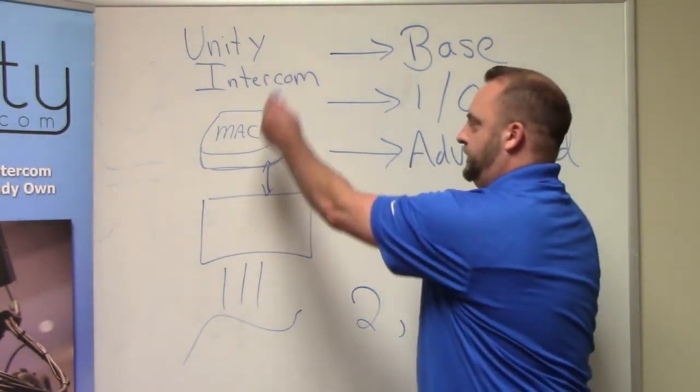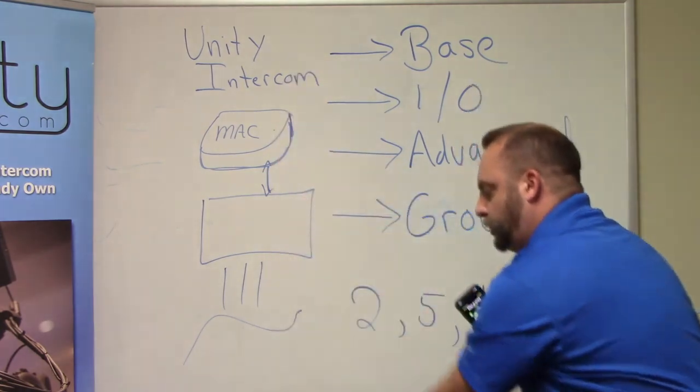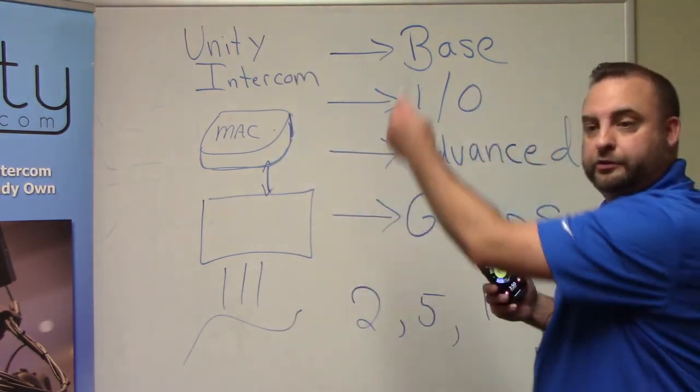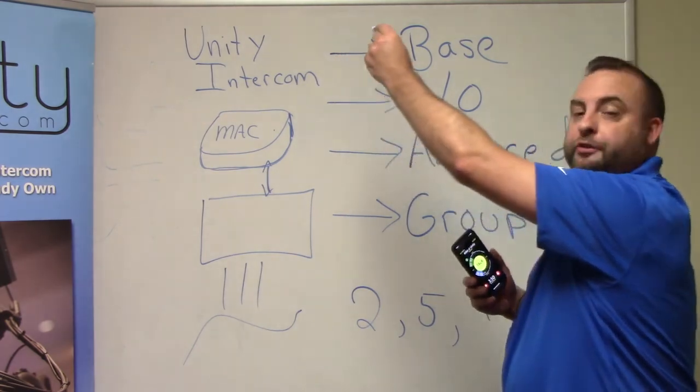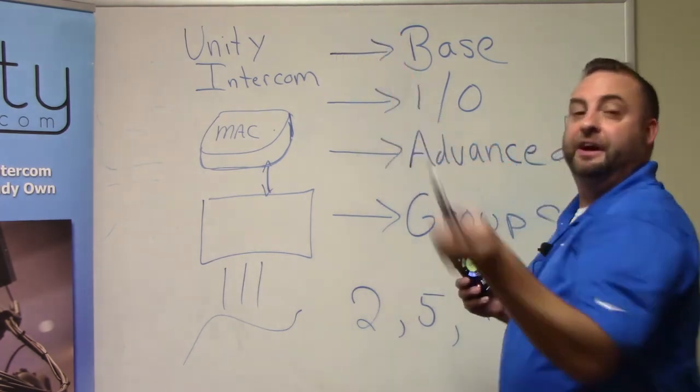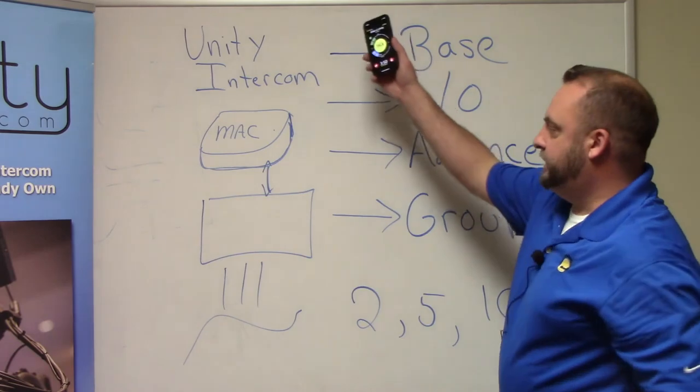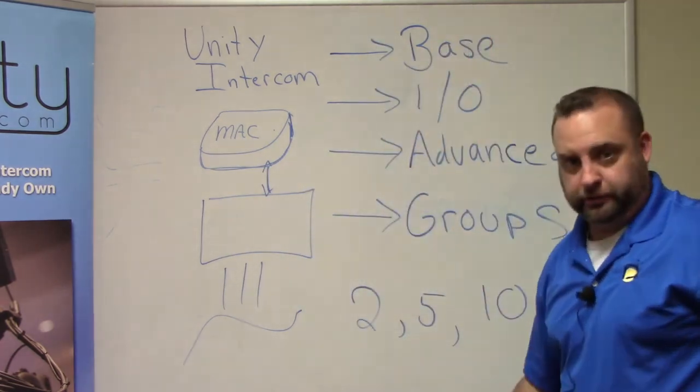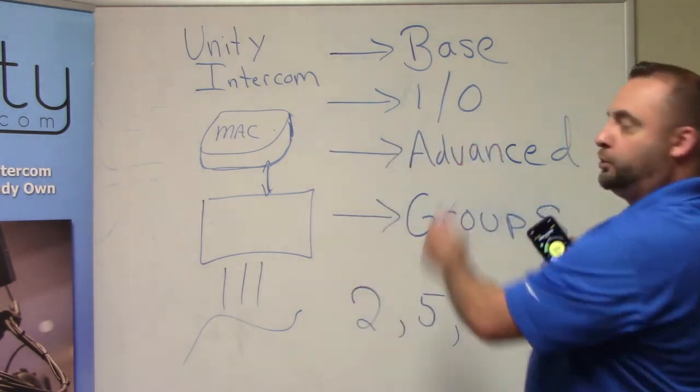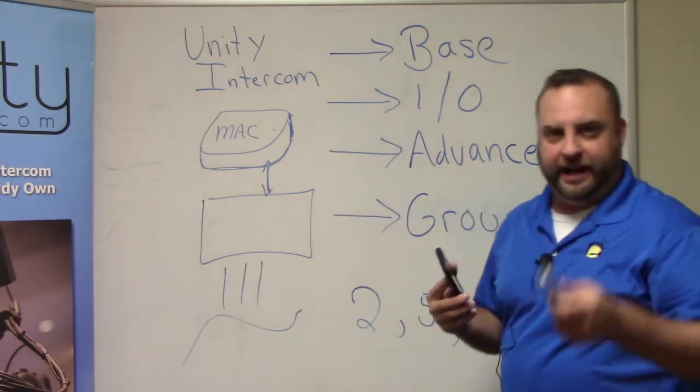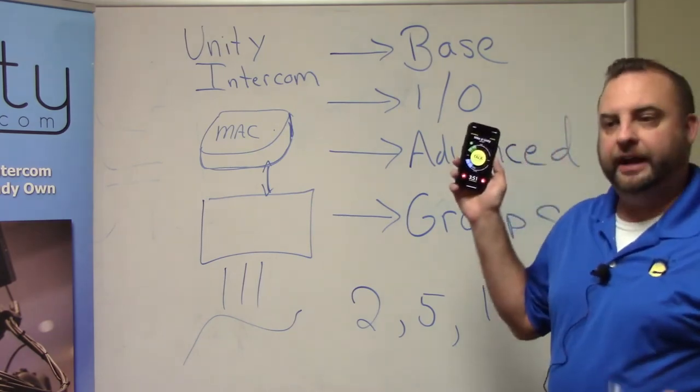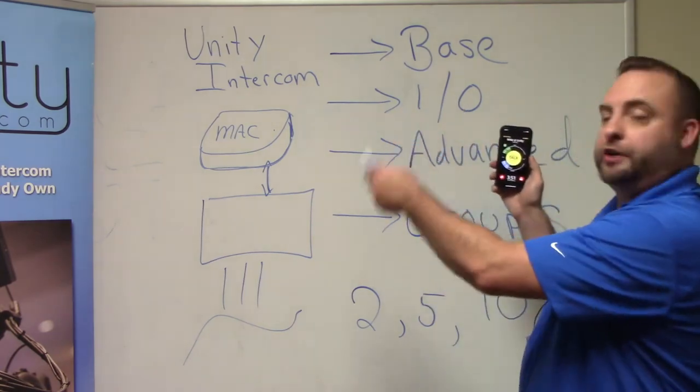So in the server, you'll actually have 128 channels that you can program. Let's do that again. It's actually 64 groups and there's 128 channels for which you build groups out of. So you have 128 channels and out of all those channels, you start to build groups.